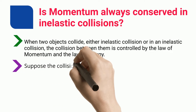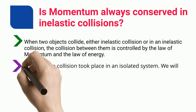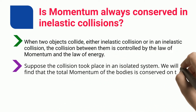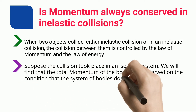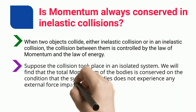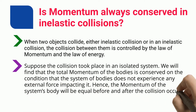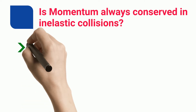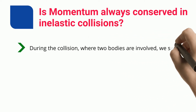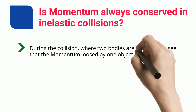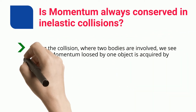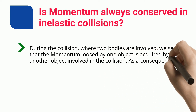Suppose the collision took place in an isolated system. We will find that the total momentum of the bodies is conserved, on the condition that the system does not experience any external force. Hence the momentum of the system will be equal before and after the collision. During the collision, the momentum lost by one object is acquired by another object involved in the collision.